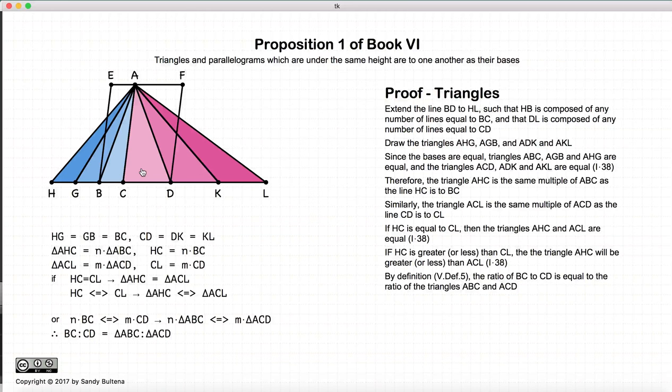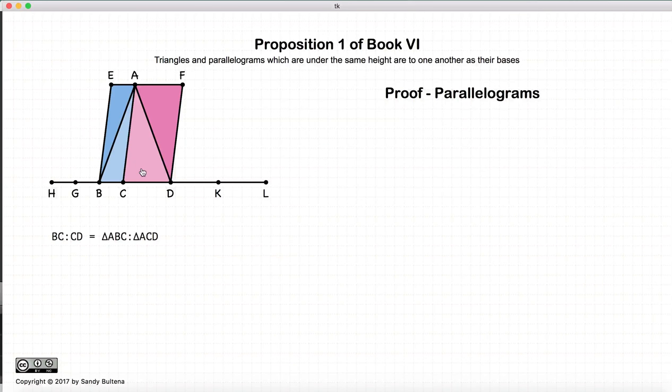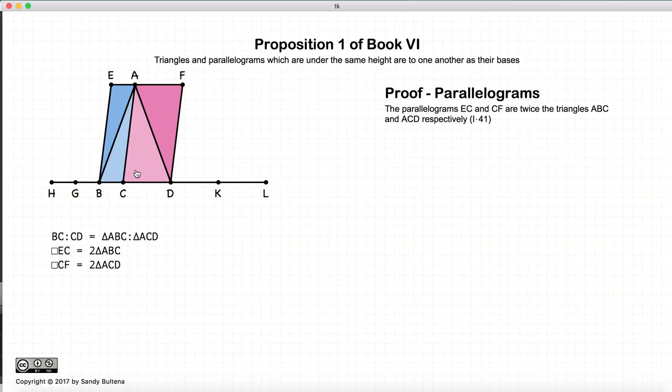Now let's show this for parallelograms. We have BC to CD is equal to the triangle ABC to ACD from the previous proof. The area of a parallelogram is twice the area of the triangle formed from it. So the area of EC is twice the area of the triangle ABC. And likewise, the area of this parallelogram is twice the area of the triangle ACD.